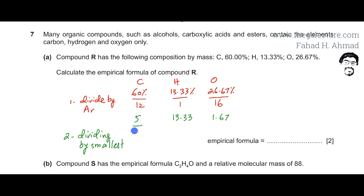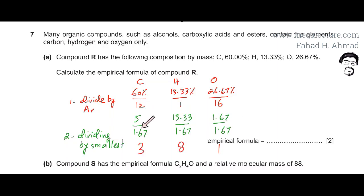I am going to divide everything by 1.67 to get a whole number ratio. The rounded values I am getting are: approximately 3 for carbon, 8 for hydrogen, and 1 for oxygen.